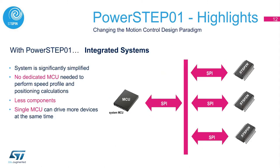Here we show a system with PowerStep01, and as you can see, it is simplified significantly — not only from the system architecture point of view, but also in terms of PCB layout. We no longer need a dedicated microcontroller to perform speed profile and positioning calculations. All high-level commands are already built in to the PowerStep01, thanks to the digital motion engine. The new architecture leads to a lower bill of materials, less complex PCB layout, and a single microcontroller which can drive more devices at the same time. The communication between the microcontroller and PowerStep01 is handled over the SPI bus.